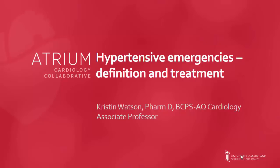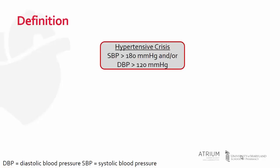This video is going to provide an overview of hypertensive emergencies, definition, and treatment. The definition of a hypertensive crisis is a systolic blood pressure greater than 180 millimeters of mercury and/or a diastolic blood pressure greater than 120 millimeters of mercury. Hypertensive crisis is then further broken down into either a hypertensive urgency or hypertensive emergency.